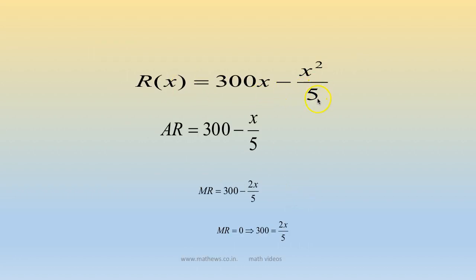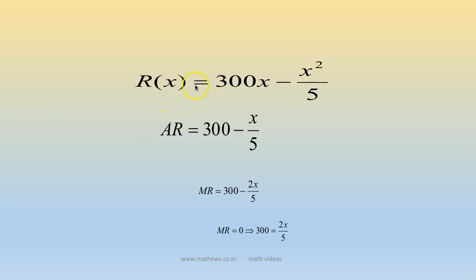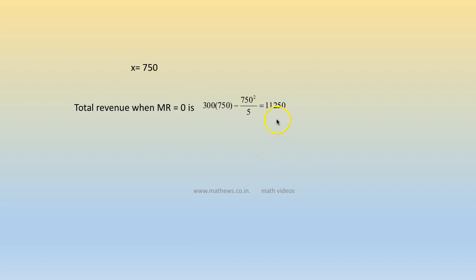r(x) = 300x - x²/5. Average revenue = total revenue / x = 300 - x/5. Marginal revenue = derivative of total revenue = 300 - 2x/5. When marginal revenue is 0, we get 300 = 2x/5, solving gives x = 750. Total revenue when x = 750 is 112500.